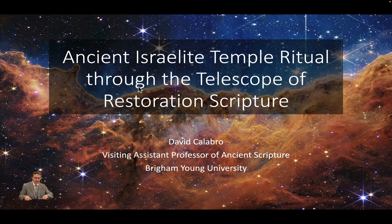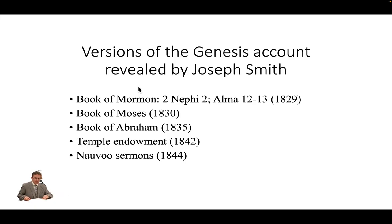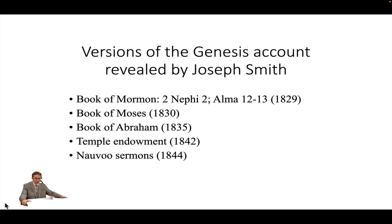Nowhere is this complexity more clearly evident than in Joseph Smith's revelations corresponding to the first chapters of Genesis. Joseph Smith's interactions with Genesis began with the translation of the Book of Mormon in 1829, which contained extended references to the Genesis account by prophets Lehi and Alma in 2 Nephi 2 and Alma 12-13, implicitly referencing the plates of brass brought out of Jerusalem around 600 B.C. It was only months after the printing of the Book of Mormon in 1830 that Joseph Smith revealed another, more complete version of the Genesis account as part of his inspired translation of the Bible — this text eventually became the Book of Moses. Later, following the purchase of Egyptian mummies and papyri in Kirtland, Joseph Smith revealed the Book of Abraham, which contained yet another version of the Genesis account.